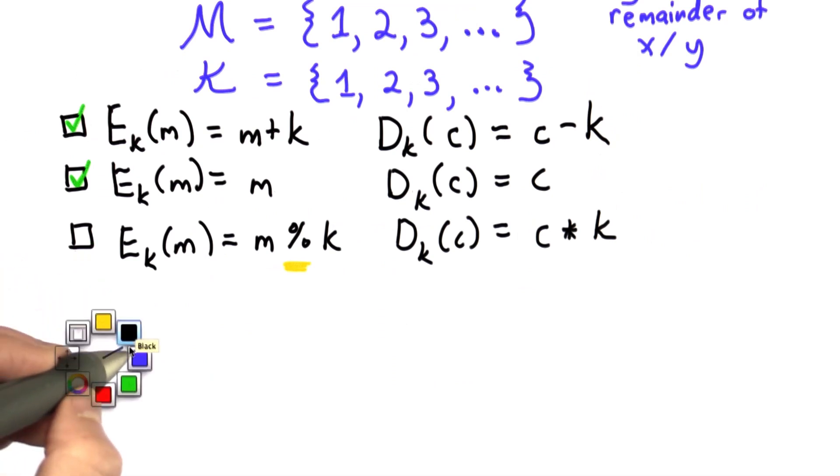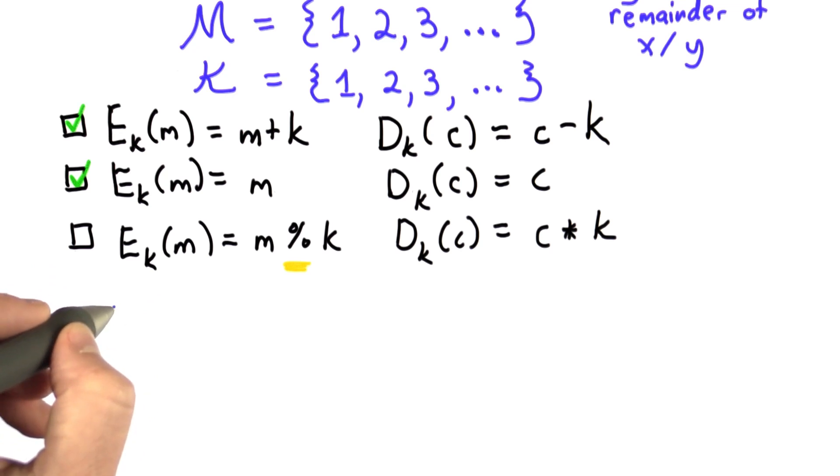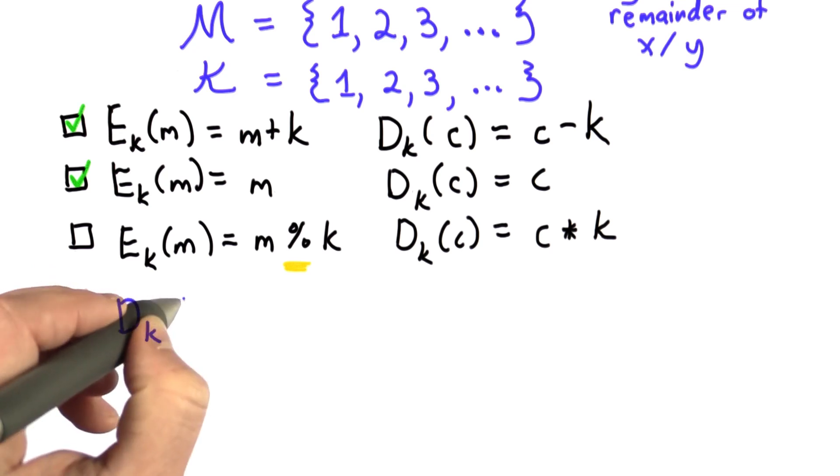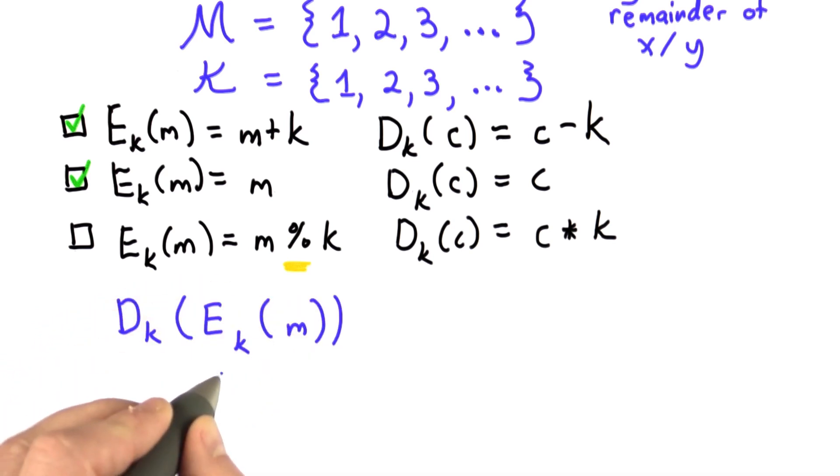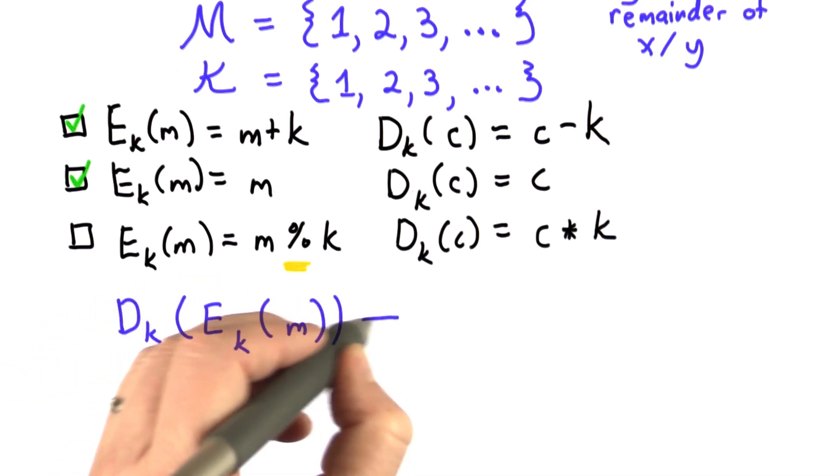Let's remember what the correctness property is. That's that for any message and any key, we have the property that when we encrypt the message with that key and decrypt it with the same key, we get the message back.